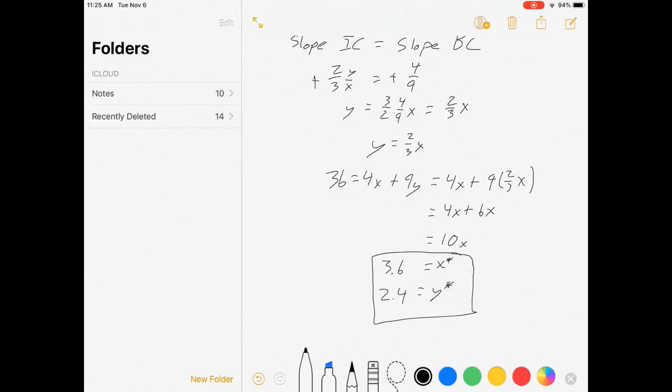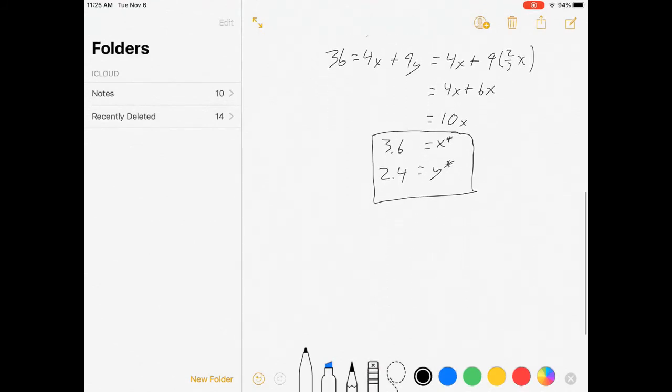Now, what happens if the price of y moves to 8? Well, that changes our budget constraint. The new slope of the budget constraint is minus px over py. Px didn't change. It's still 4. 4 over 8. So just minus 1 half.